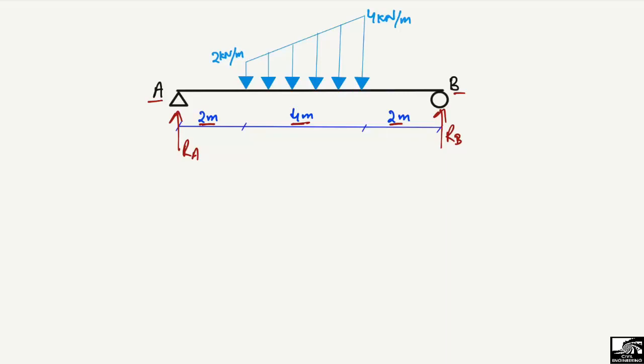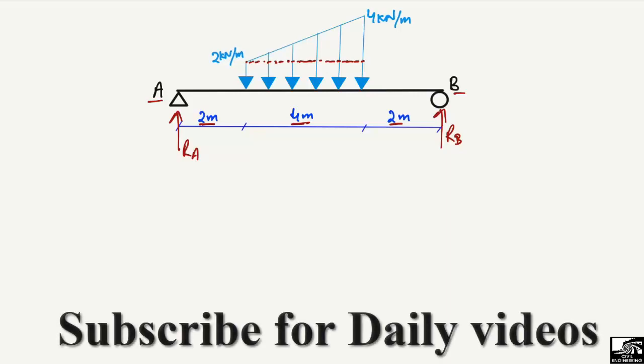This is a complicated kind of load — there is no uniformly distributed load or point load, it is a trapezoidal load. We can handle this by splitting the trapezoidal load into two loads: one is a rectangular load and one is a triangular load.